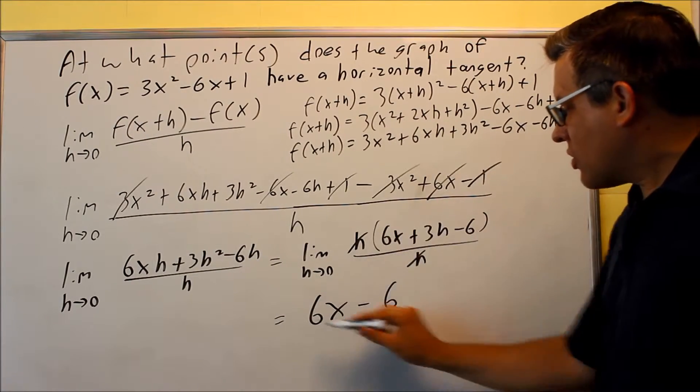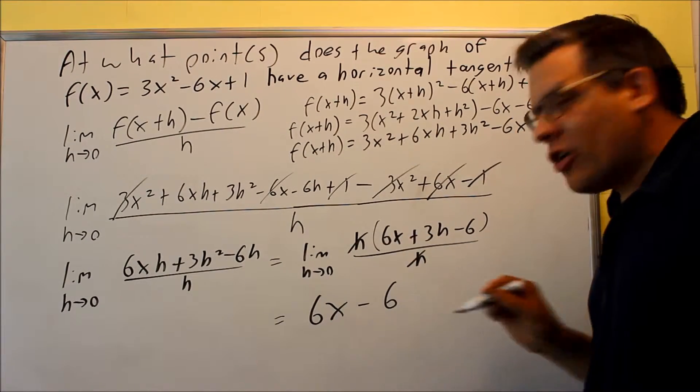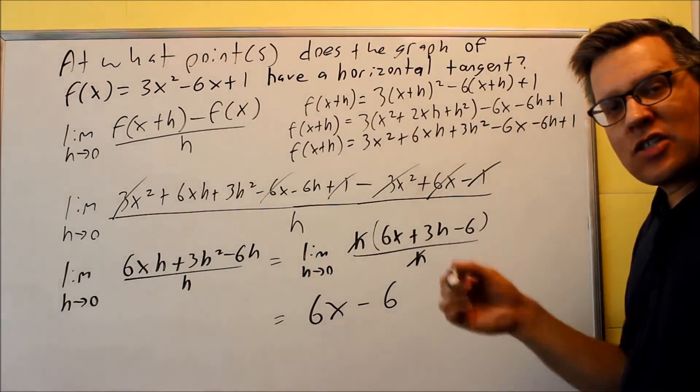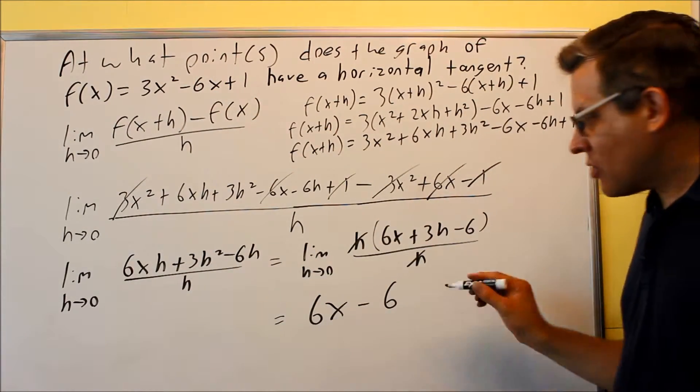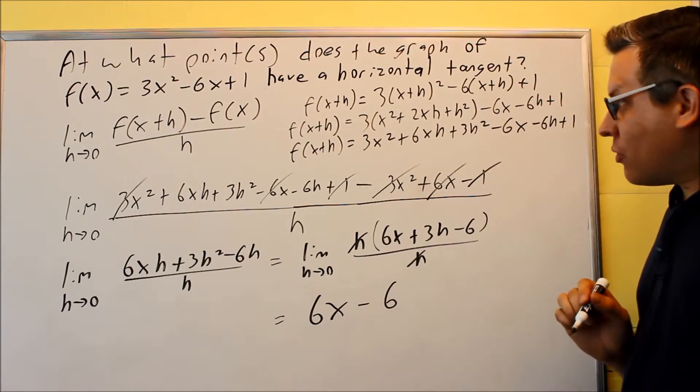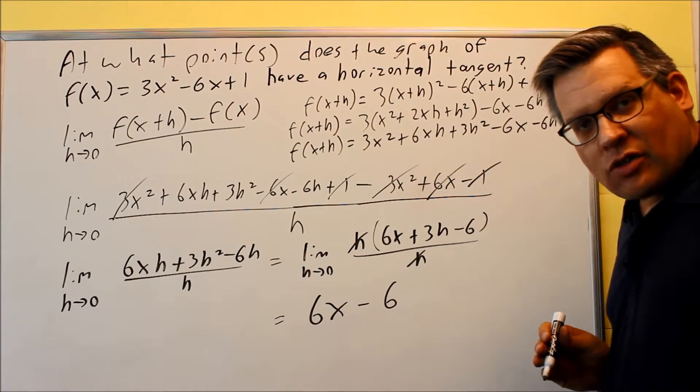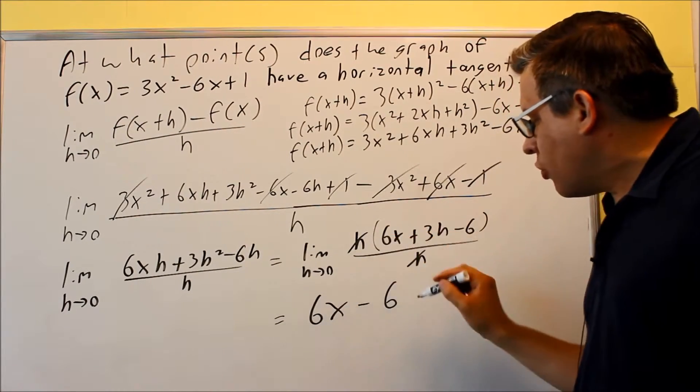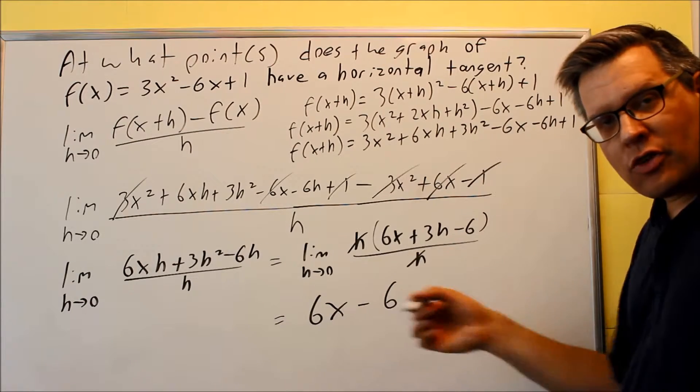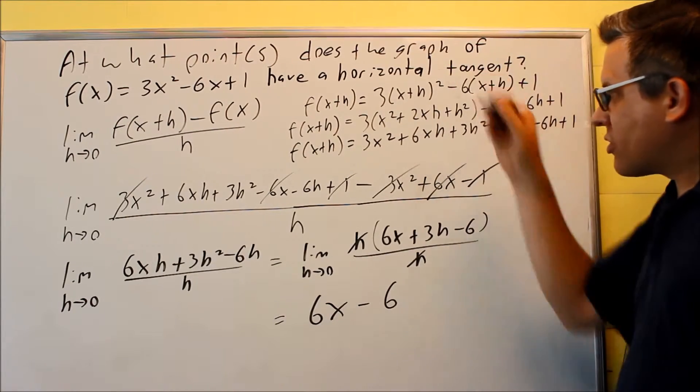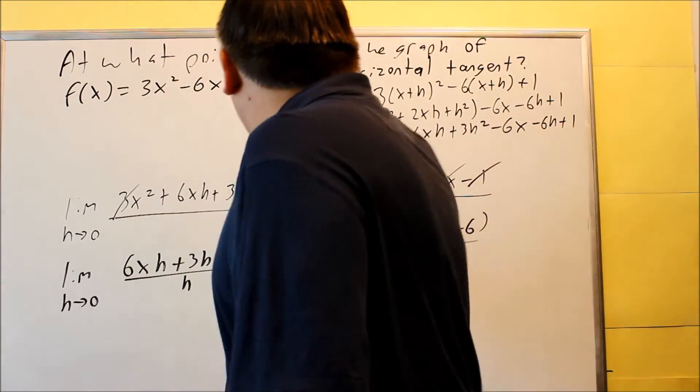So this that I found, this is called the derivative of f(x). What this is used for is now I have an expression where I can put in any x value I want, and I can find the slope at any point on this particular curve. Now, the problem asks us to find out what point or points does it have a horizontal tangent. So this expression right here would be your derivative. What I'm going to do is set this equal to 0, because the derivative is the same thing as a slope. If I want a slope of 0 because it's horizontal, I can do that and solve for x.